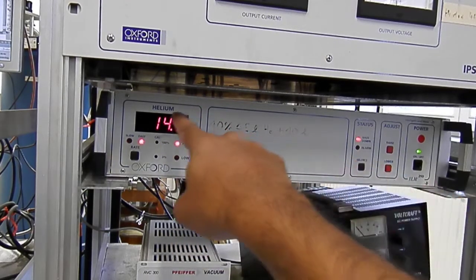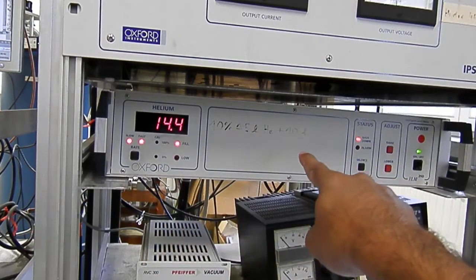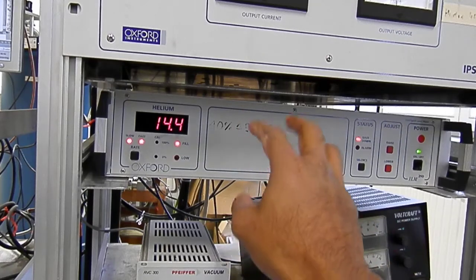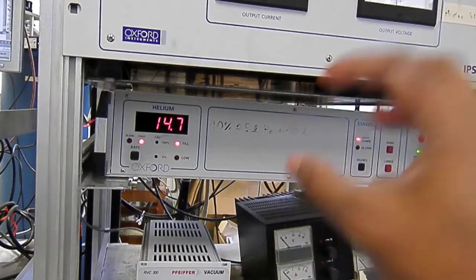This device, the helium meter in the Oxford, gives you an estimation of how much helium is inside your magnet.